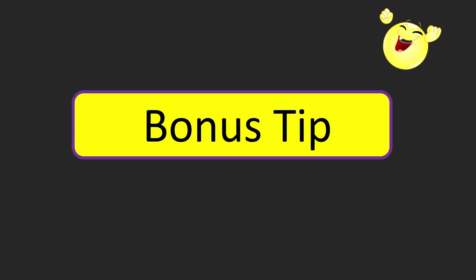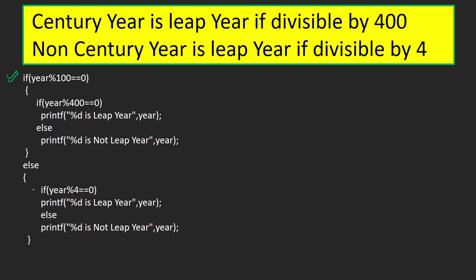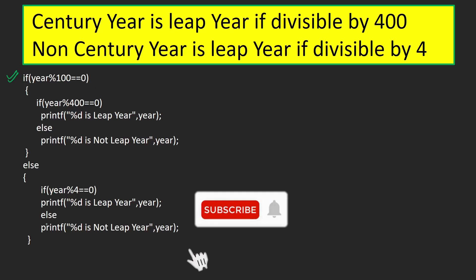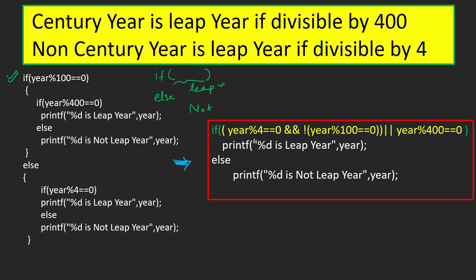Now for the bonus tip: you can check the leap year condition in just one line. A century year is a leap year when divisible by 400, and a non-century year when divisible by 4. Instead of nested if-else, I use a simple if-else where the if condition combines all divisibility tests using logical AND and OR operators — (year % 4 == 0 && !(year % 100 == 0)) || (year % 400 == 0).